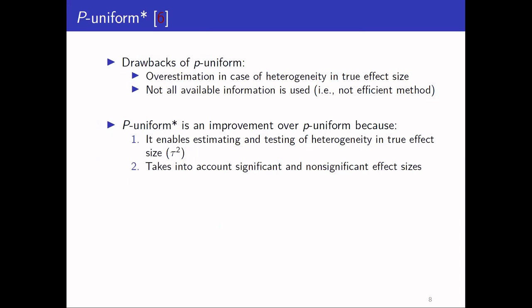There are some drawbacks of the PUNIFORM method that we realized when working on it. It yields overestimation of effect size in case of heterogeneity in the true effect size. It is also not an efficient method because not all available information is used — the method makes use of only statistically significant effect sizes.